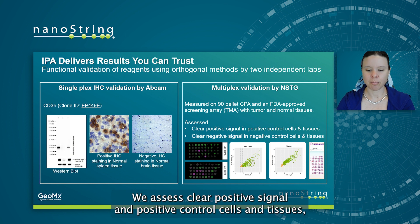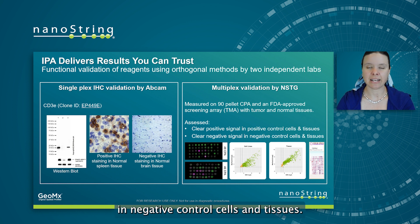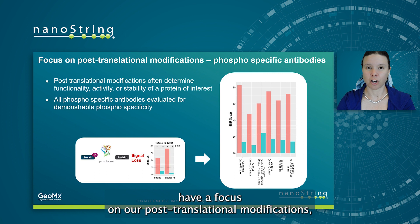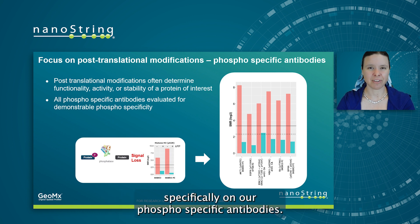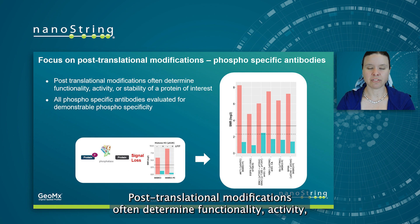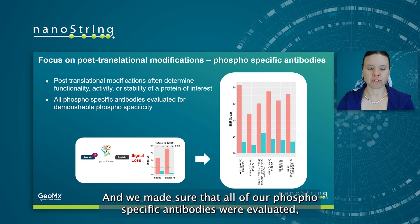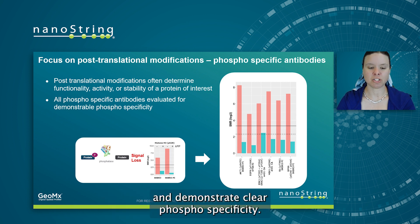We assess clear positive signal in positive control cells and tissues, and then we assess clear negative signal in negative control cells and tissues. Comparing the two, we can tell when our antibodies are at their most functional. We also have a focus on post-translational modifications, specifically on our phospho-specific antibodies. Post-translational modifications often determine functionality, activity, or stability of your protein of interest, and we made sure that all of our phospho-specific antibodies were evaluated and demonstrate clear phospho-specificity.